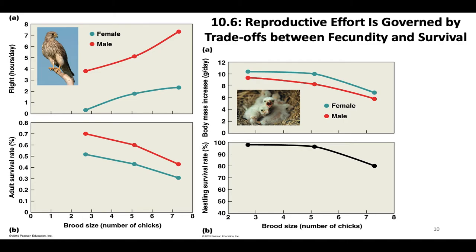Now let's talk about trade-offs between reproducing and your own survival. This study on European kestrels manipulated brood size — researchers determined how many chicks the birds had. When brood numbers are high, around 7 to 8, you see an increase in both female and male flight — presumably because they have more mouths to feed, so they have to collect more food. But that increased flight time also makes them more susceptible to anything in the environment that could kill them.